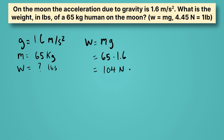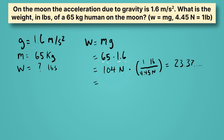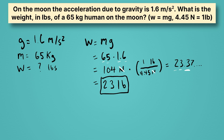Now we convert to pounds: put Newtons on the bottom and pounds on top, using 1 pound equals 4.45 Newtons. Dividing 104 by 4.45 gives 23.37... Rounding to two sig figs — our mass and acceleration each have two — we keep 23. The units are pounds, not Newtons, because Newtons cancel out. So on the moon, the average human weighs 23 pounds.